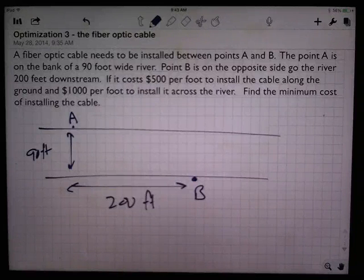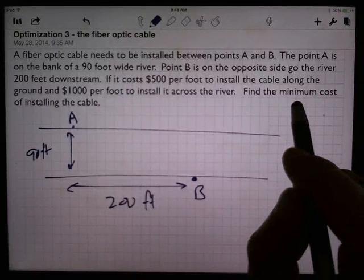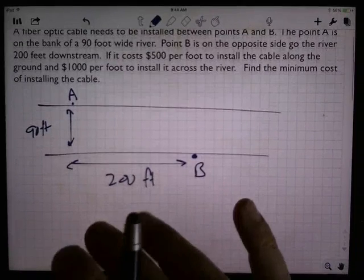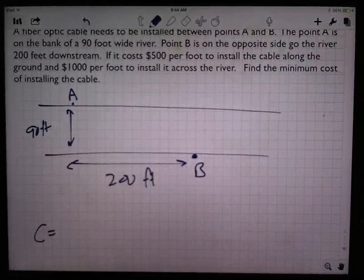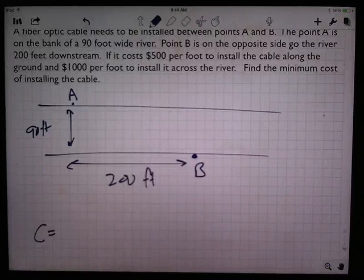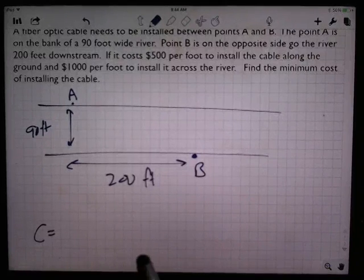First thing I notice, minimize the cost. So I'm going to need cost equals. Now I've got to look at what my options are. What variables do I have involved here?